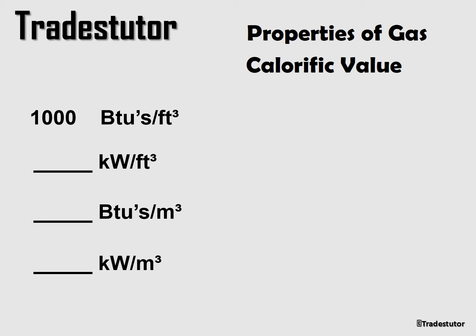For the first conversion — BTUs per cubic foot to kilowatts per cubic foot — the volume stays the same, so we just need to convert BTUs into kilowatts. We use the fact that 3412 BTUs equals one kilowatt. Dividing 1000 by 3412, we end up with 0.293 kilowatts per cubic foot.